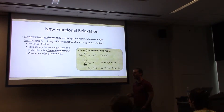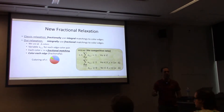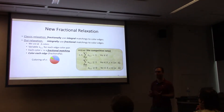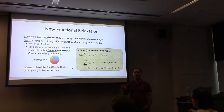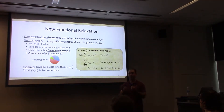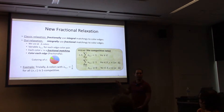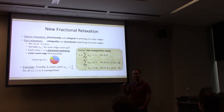There's a trivial one-competitive solution to this relaxation: assign every edge-color pair the value one over delta for delta different colors. Clearly every edge is colored exactly once — delta times one over delta. For every vertex, since the max degree is at most delta, summing over all its edges times one over delta is at most one. This actually relates to what we did for the unknown delta case.